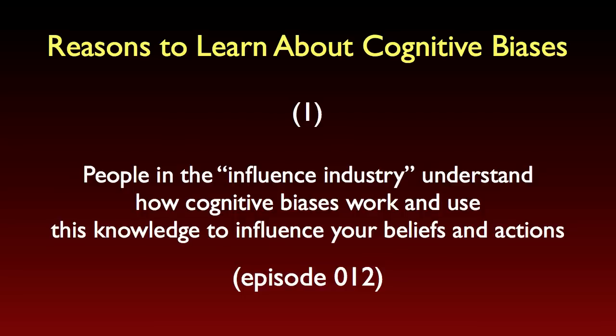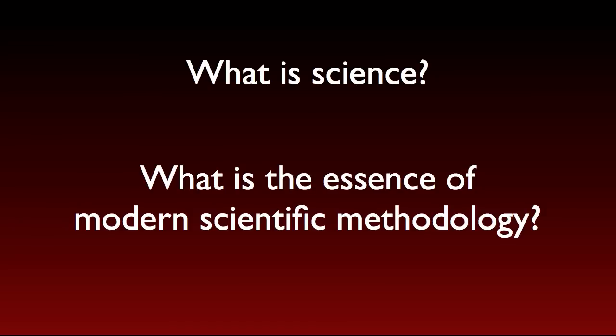We need to be able to discern good from bad reasons for belief. In this episode, I want to look at another reason for learning about cognitive biases. This reason has to do with a more theoretical question, and one that I know is close to the interests of many listeners of this podcast. The question is simple: What is science? And more specifically, what is the essence of modern scientific methodology? This is an old question. It's a philosophical question about the basis and rationale of the scientific method. It's also a contentious question. People disagree about what science is and what its methods are.